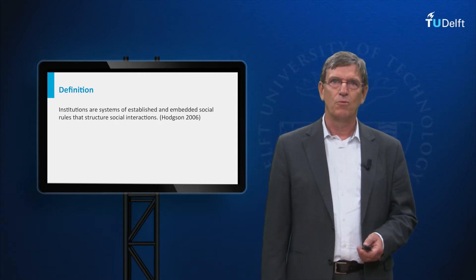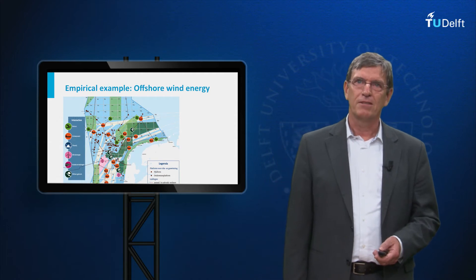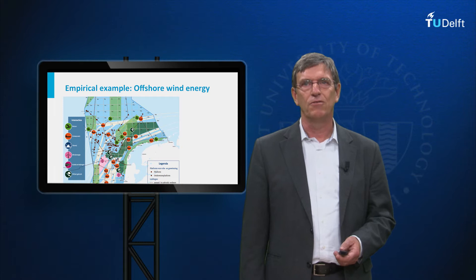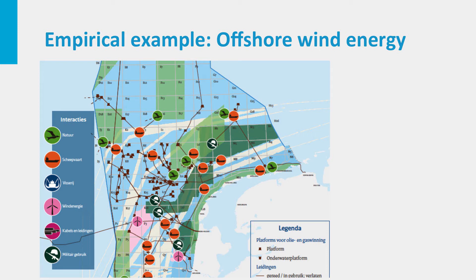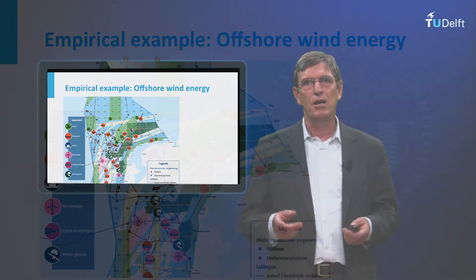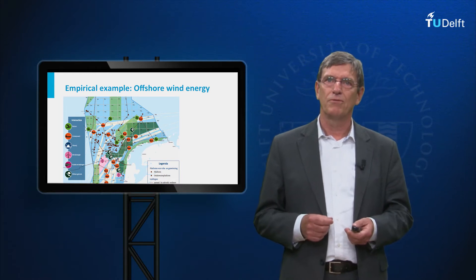I would like to illustrate this definition with a short example. This example is offshore wind energy, which can be considered as an innovation of the electricity system. Here we see a small map of the Dutch part of the North Sea. As illustrated by these different lines and dots, this North Sea is not an empty space, but it is used for very different purposes like natural recreation, naval transport, fishery, cables, or even military uses — military areas are there to practice certain military maneuvers. In addition, wind energy is introduced into the North Sea, so there are very different users that make use of the North Sea.